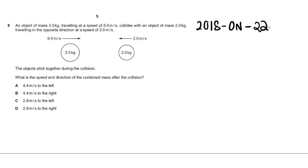The first sum says that an object of mass 3 kg traveling at a speed of 6 meters per second collides with an object of mass 2 kg traveling in the opposite direction at a speed of 2 meters per second. It says that the objects stick together during the collision. And it asks, what is the speed and direction of the combined mass after the collision?